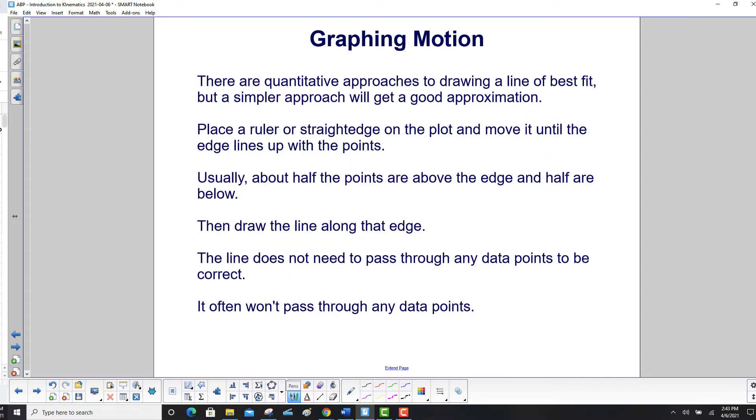There are quantitative approaches to drawing a line of best fit, but a simpler approach will get a good approximation. First, place a ruler or a straight edge on the plot and move it until the edge lines up with the points. Usually about half the points are above the edge and half are below. Then draw the line along that edge. The line does not need to pass through any of the data points to be correct. It often won't pass through any data points.